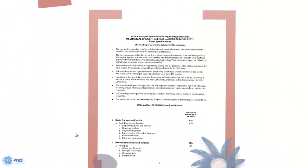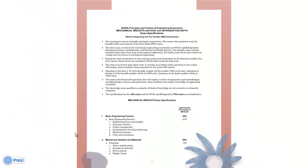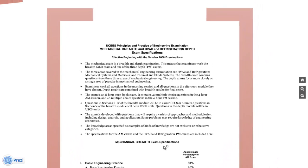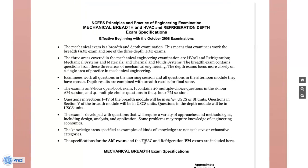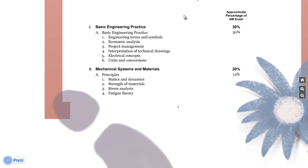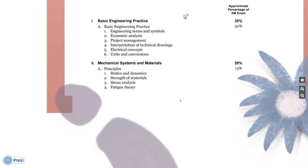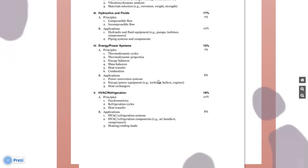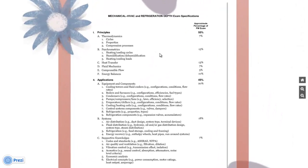This slide shows the first page of the NCEES outline. It first provides general information on the PE exam and then proceeds to outline the various topics in the morning session. Topics include basic engineering practice, mechanical systems and materials, hydraulics and fluids, energy power systems, and finally HVAC and refrigeration.